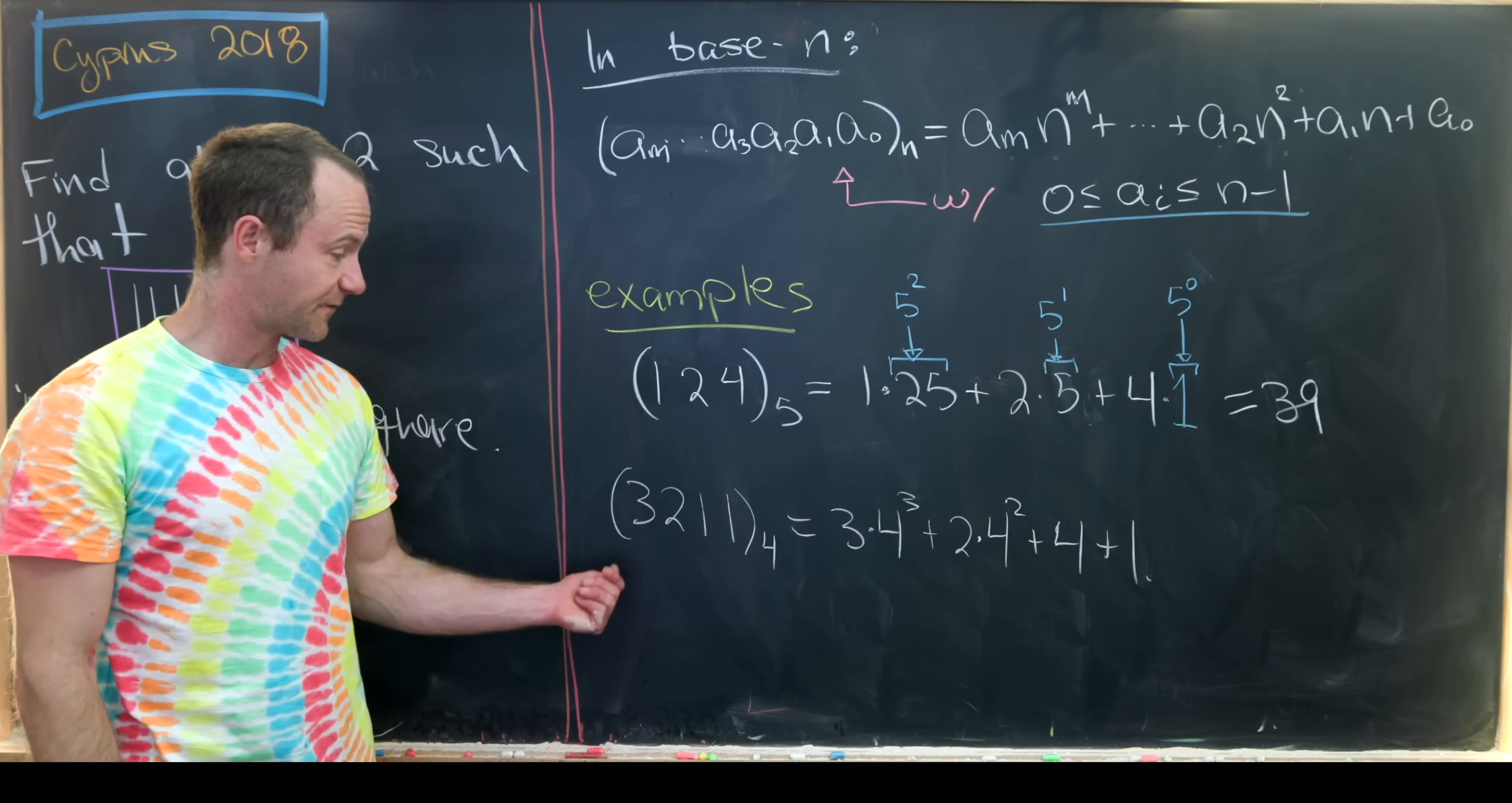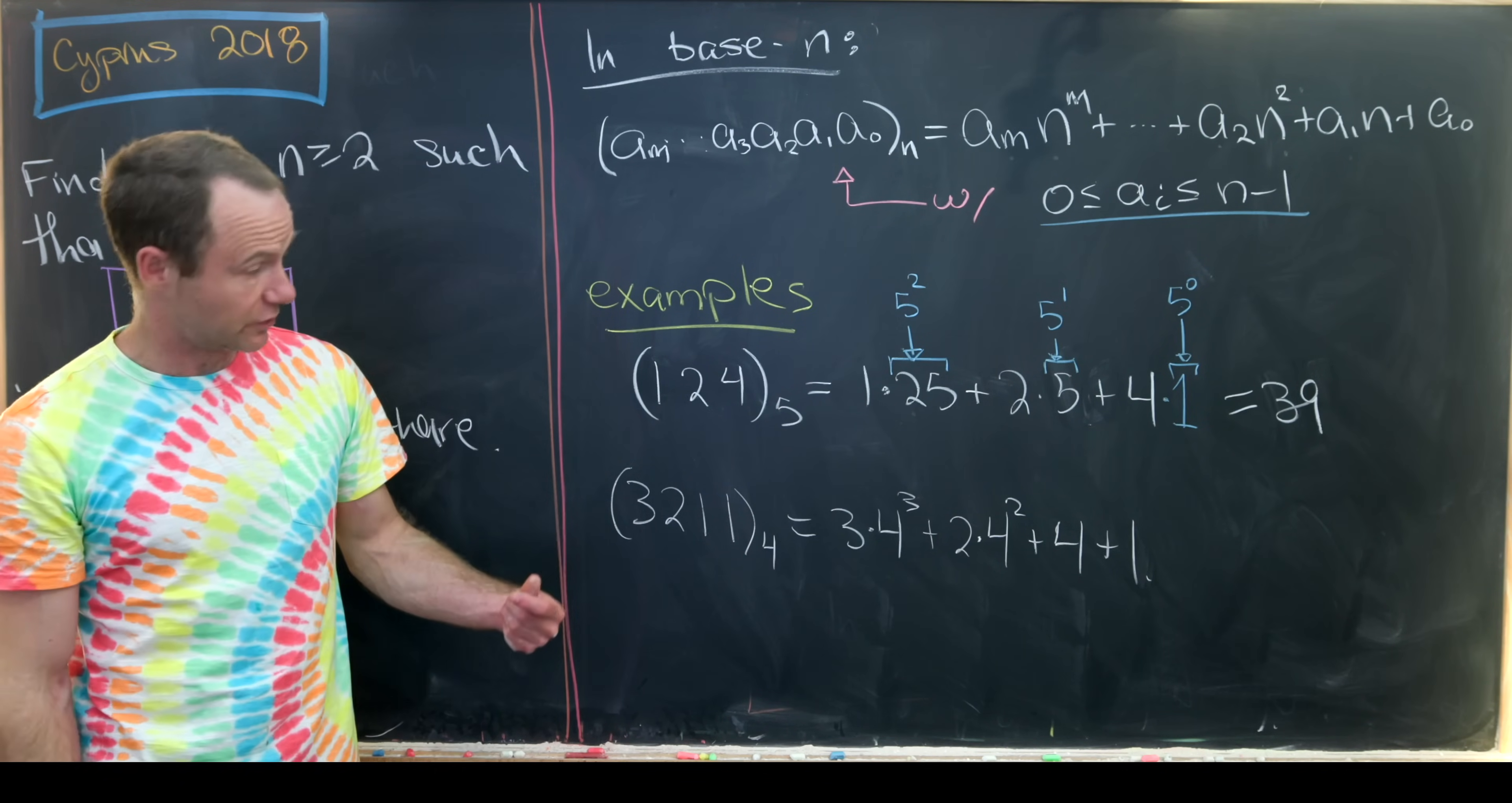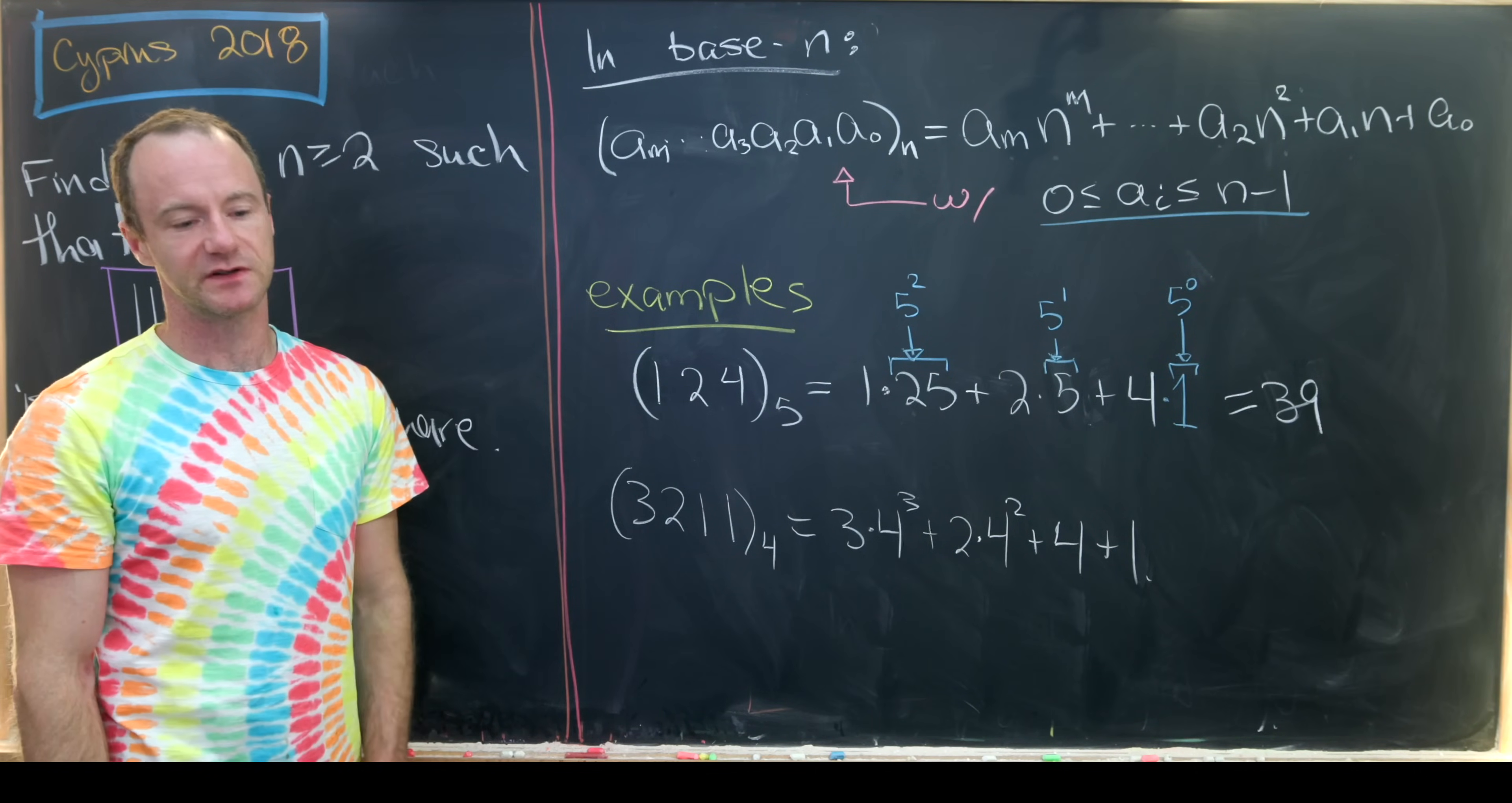And then in base 4, the number 3, 2, 1, 1, that'll be 3 times 4 cubed plus 2 times 4 squared plus 4 plus 1. So I won't work that out. But you could do a bunch more examples built off of this.